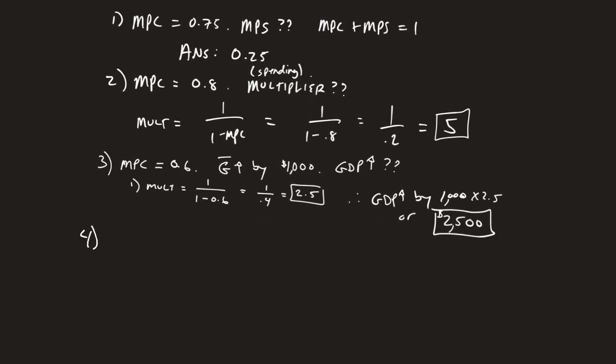The fourth question says a $2,500 increase in autonomous investment leads to a $25,000 increase in GDP. What is the MPC?